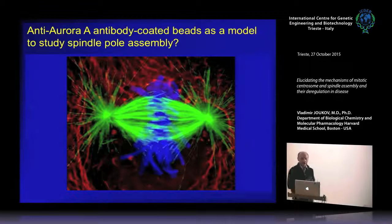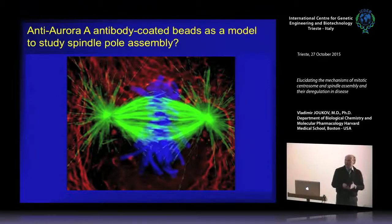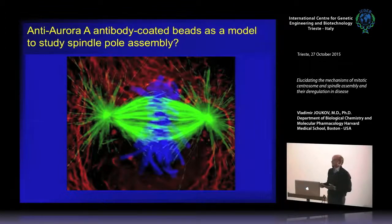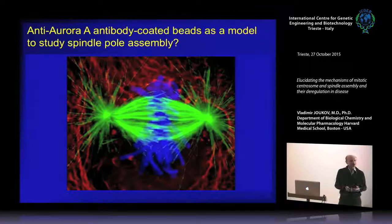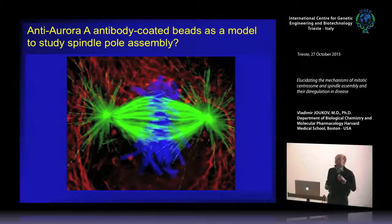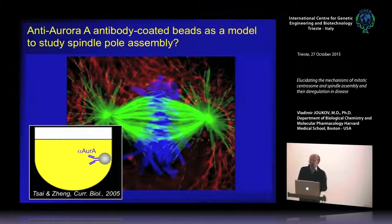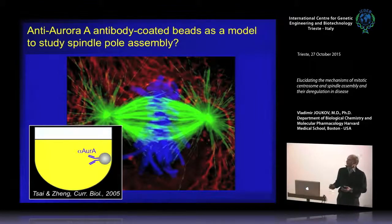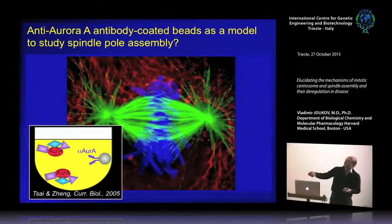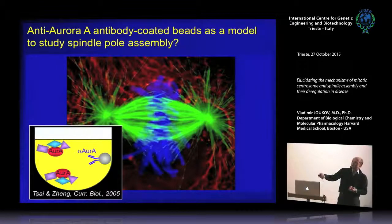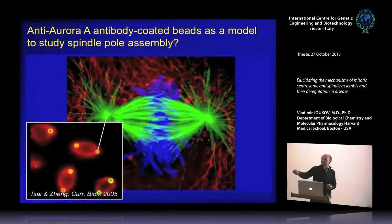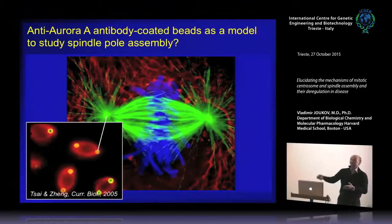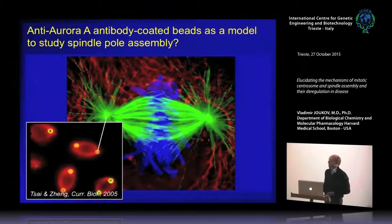Now I will tell you how our efforts to understand the molecular function of BRCA1 led us unexpectedly to the discovery of a process underlying centrosome formation. We wanted to establish an assay that models spindle pole assembly and allows dissection of this process. We became excited about an observation by Jens Lüders and colleagues, who showed that magnetic beads coated with anti-Aurora antibody, when added to extract, recruit endogenous Aurora A in complex with some proteins, form spindle-like structures, and function as artificial centrosomes. We wanted to use this assay for biochemical studies and to understand the molecular function of BRCA1.